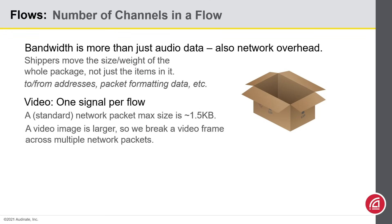Now for video, these differences don't impact as much because video signals are pretty large. A network packet's maximum size is about 1.5 kilobits. A single frame of video is much larger than that, so we obviously have to break a single frame into pieces and send that across the network. When we make a Dante video flow, a single video stream will occupy the flow all by itself.